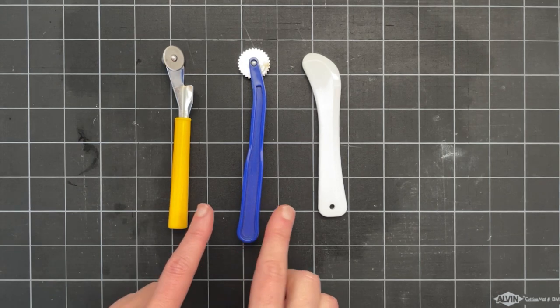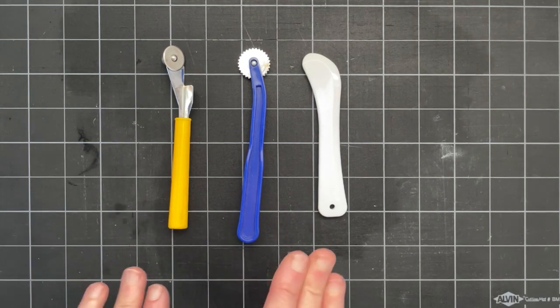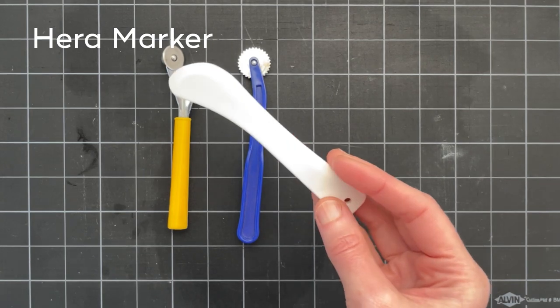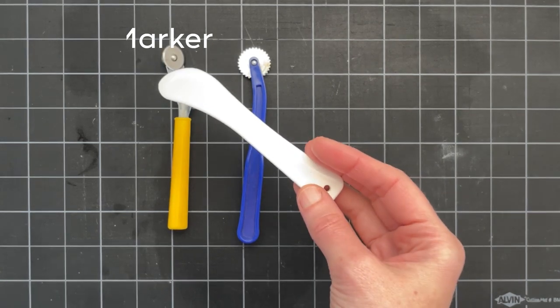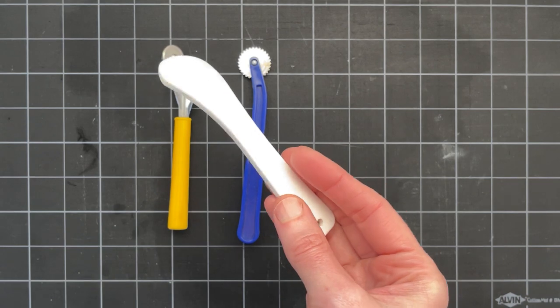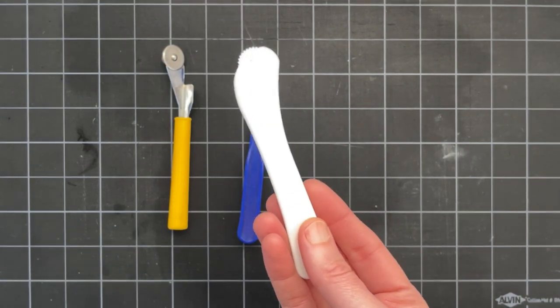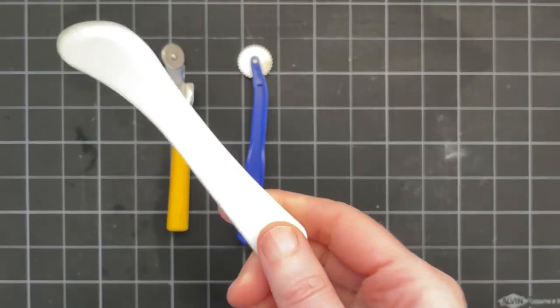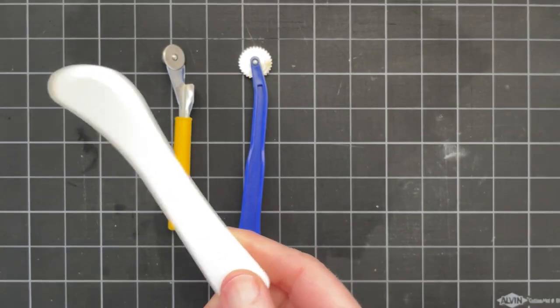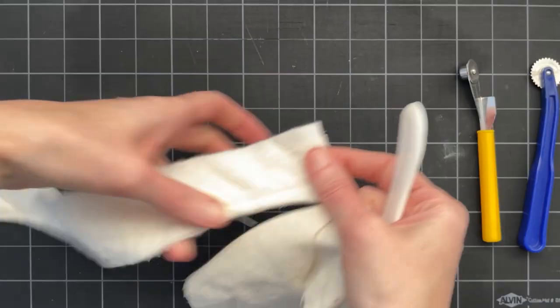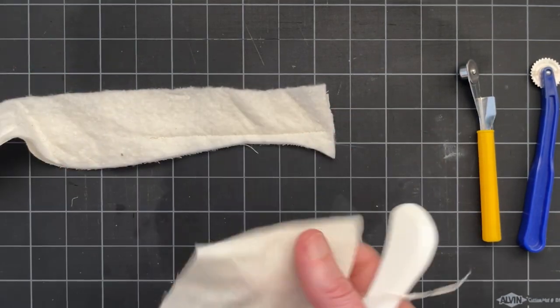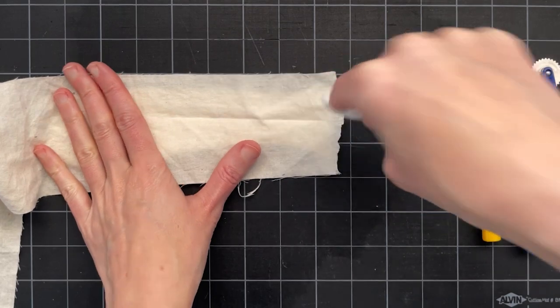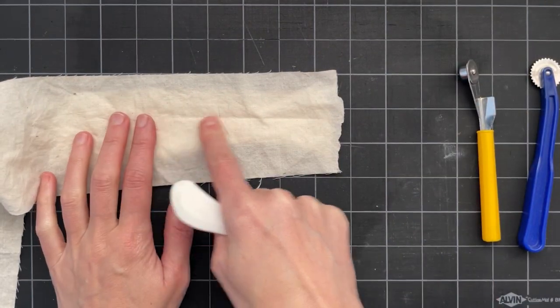These three tools use pressure to create marks on the fabric. This tool is a Hera marker and this is more commonly used in quilting. This one is made out of plastic but it's a lot like a bone folder that you would use in bookmaking. I use this tool to create quilting lines when I'm quilting. For this you need to layer your fabric on top of your batting and then just press hard with your Hera marker and you make a little crease.